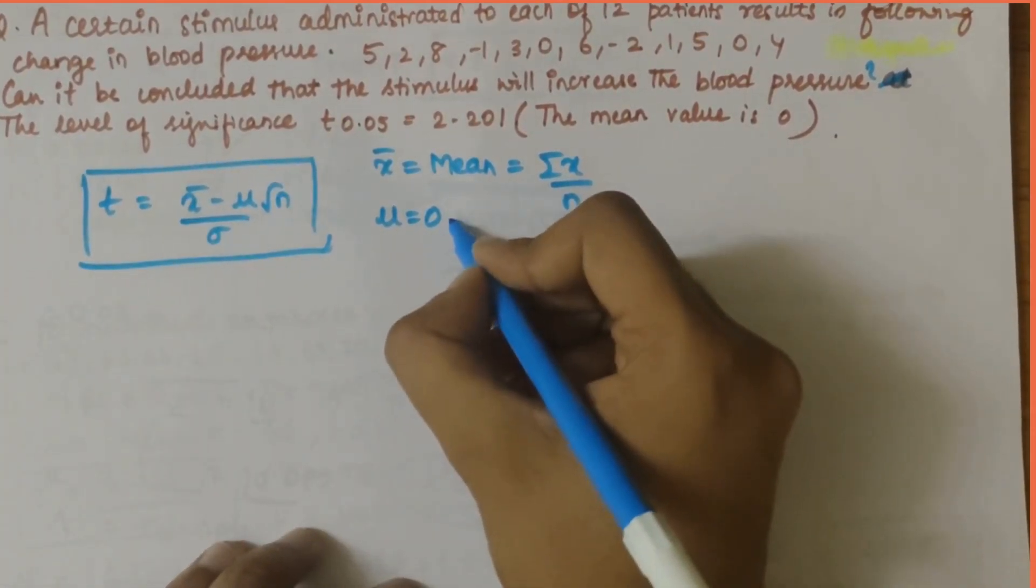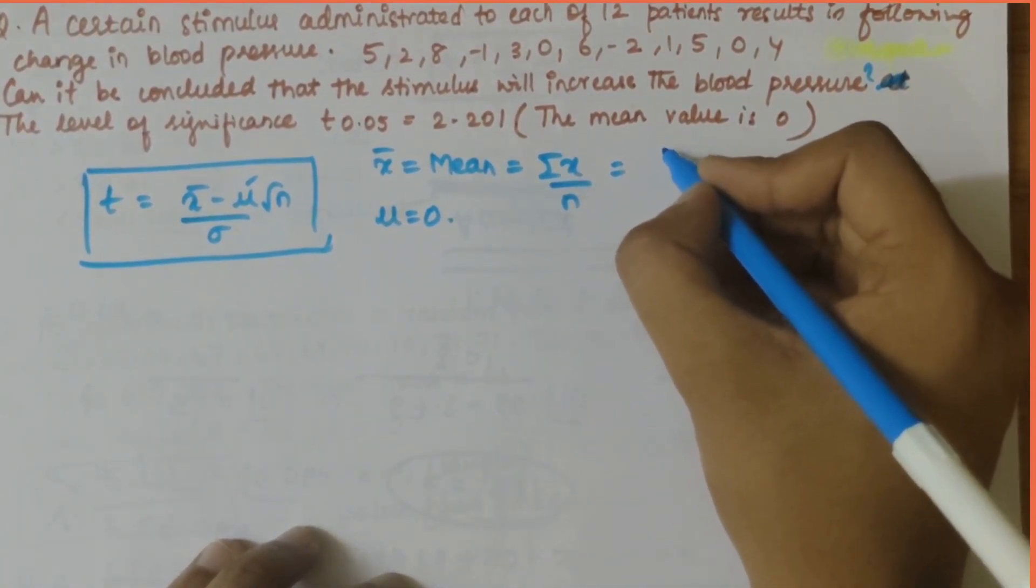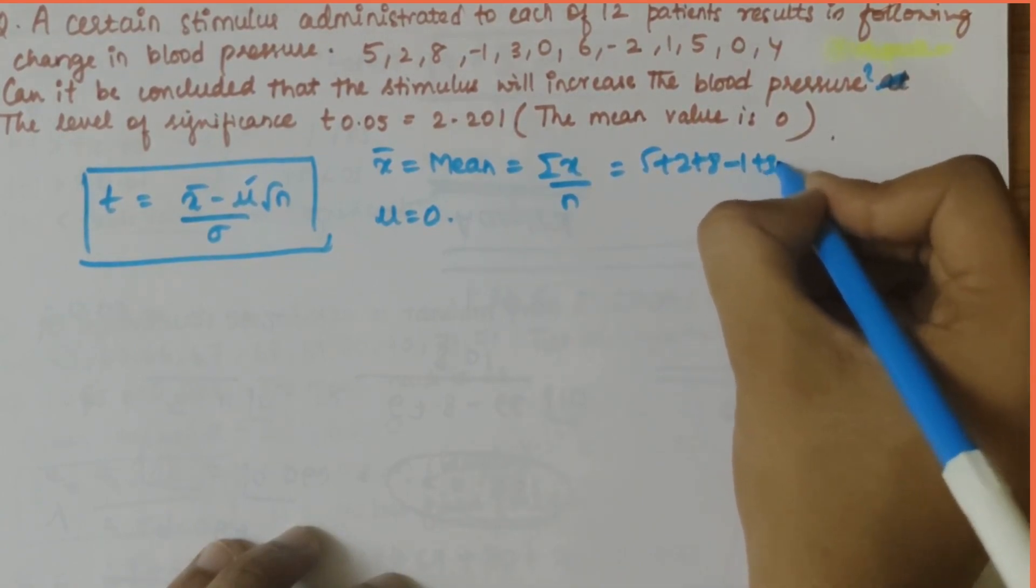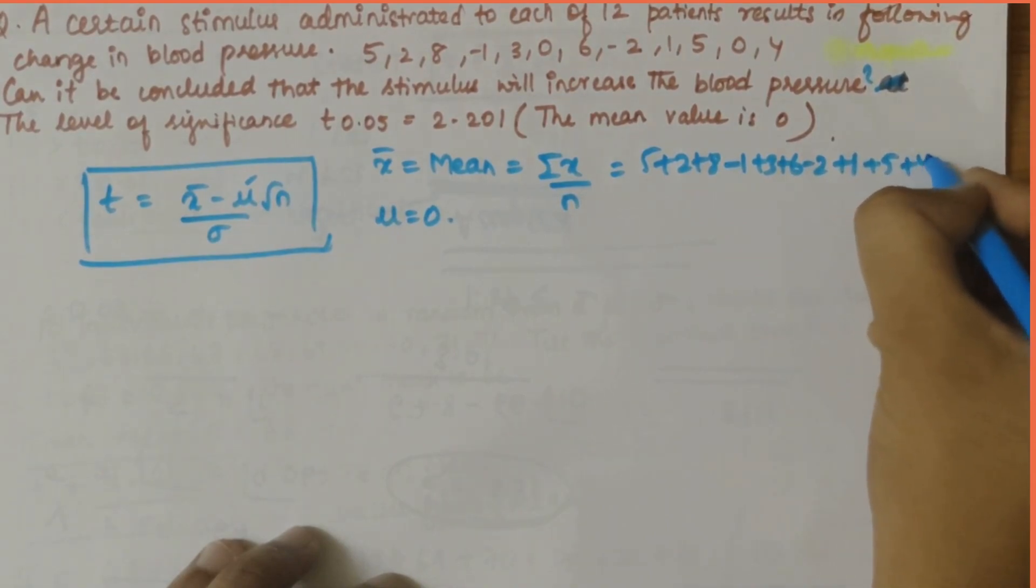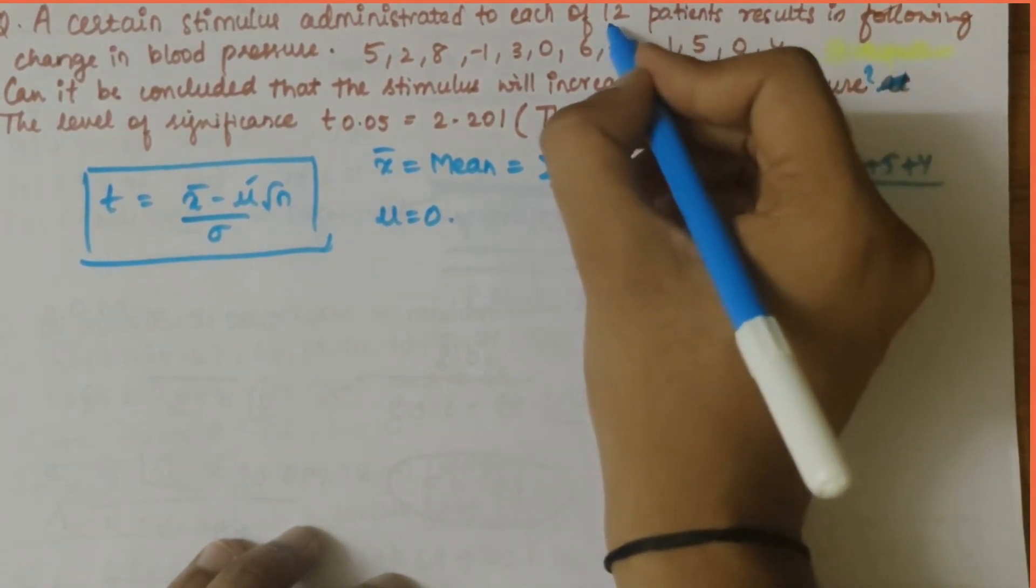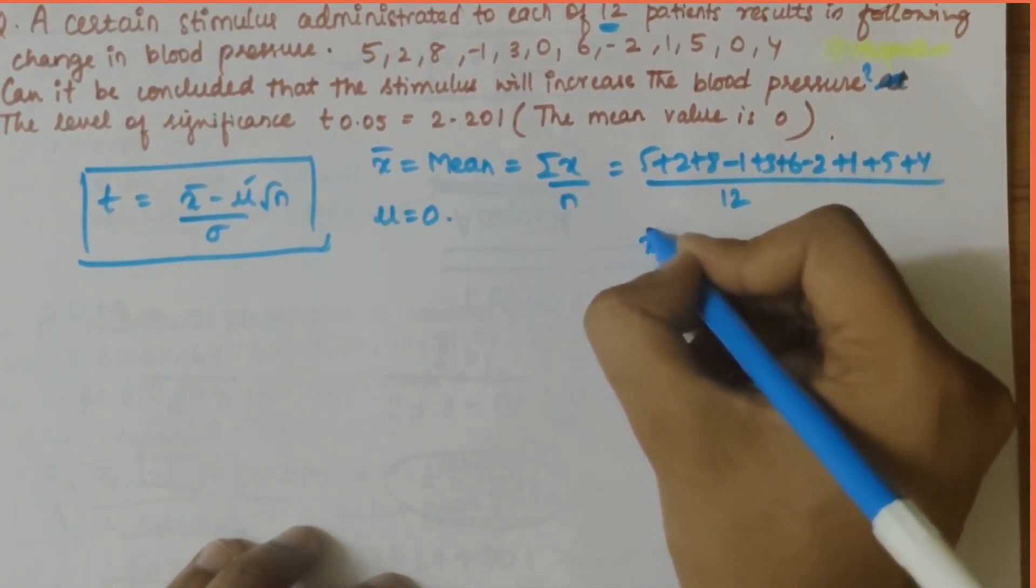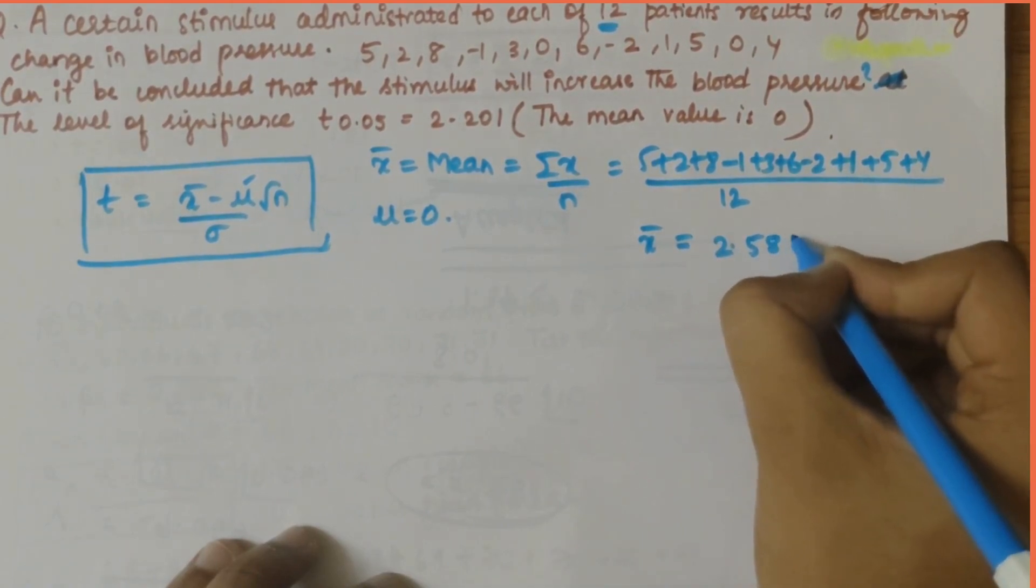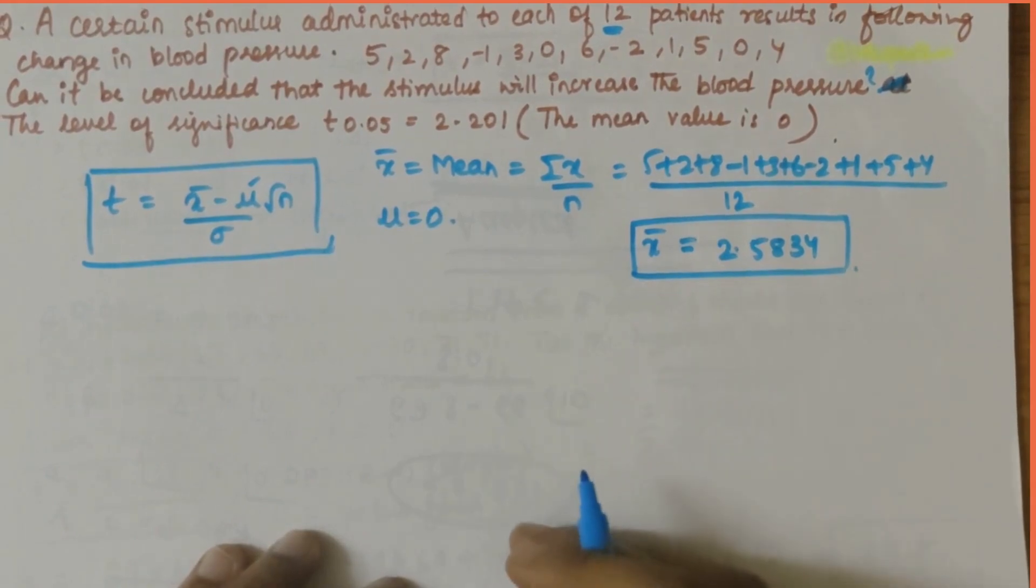So x bar, let's calculate that. It will be summation of 5 plus 2 plus 8 minus 1 plus 3 plus 6 minus 2 plus 1 plus 5 plus 4, divided by 12 patients total, so n value is 12. If you solve this you get the value as 2.5834.